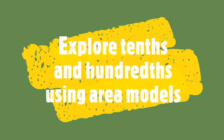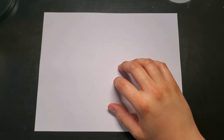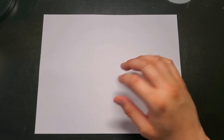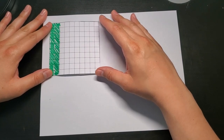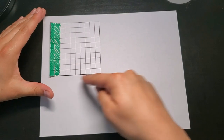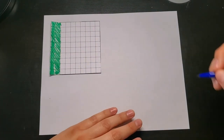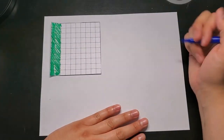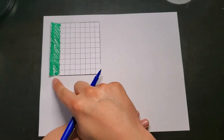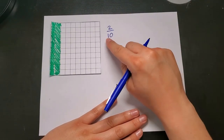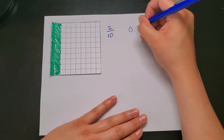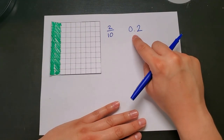First, we're going to understand hundredths through an area model. I have an area model with two strips shaded. I like to think of one grid as a dollar — that's our whole. So this is one dollar. There are ten tenths, or ten dimes in a dollar. I have two tenths shaded in, which I write as the fraction two-tenths, and as the decimal 0.2.